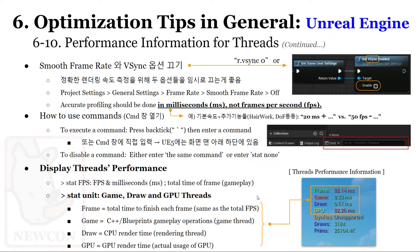정확한 렌더링 속도 측정을 위해 smooth framerate 옵션을 끄는 게 좋습니다. Project Settings에서 smooth framerate를 꺼주시고, Vsync도 끄는 것이 좋습니다. 블루프린트를 사용한다면 Set Vsync Enabled 노드를 GetGameUserSettings에 연결해서 꺼줄 수 있습니다.